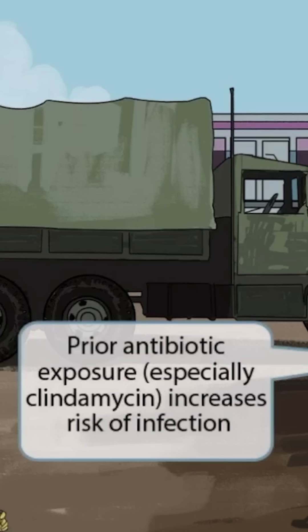This occurs because if antibiotics are administered, they can kill off healthy intestinal flora. Normally, the intestinal flora has a large percentage of protective organisms, as well as a small percentage of potentially harmful organisms. Therefore, antibiotic administration can disrupt this balance by killing the protective organisms, which can then result in infection from pathogenic organisms such as C. diff.